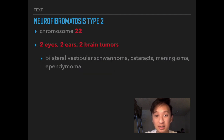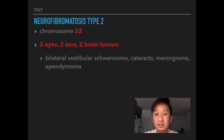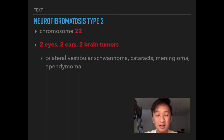For NF Type 2, the mnemonic is 'two eyes, two ears, and two brain tumors.' Two eyes represents bilateral juvenile cataracts — bilateral opacifications of the lens. Two ears represents vestibular schwannoma, which must present bilaterally to diagnose NF Type 2, and can result in peripheral vertigo and impaired hearing.